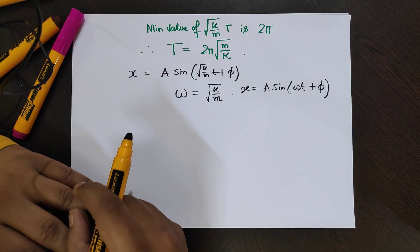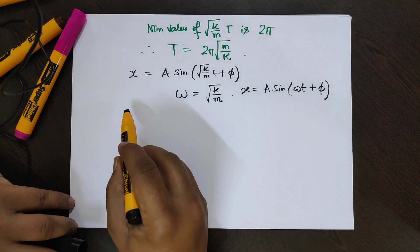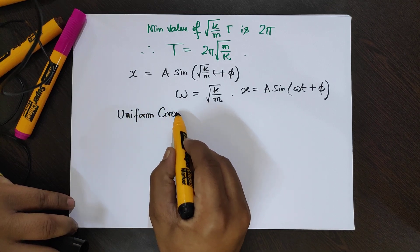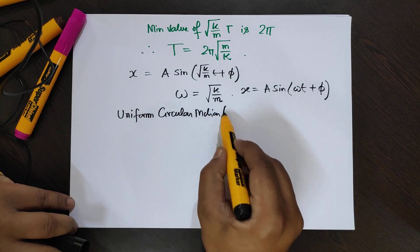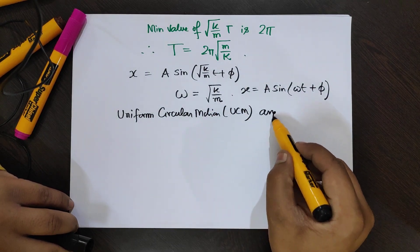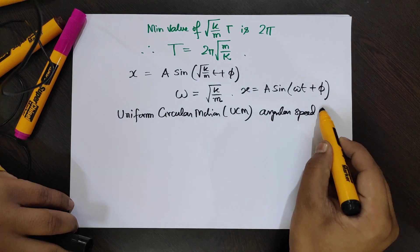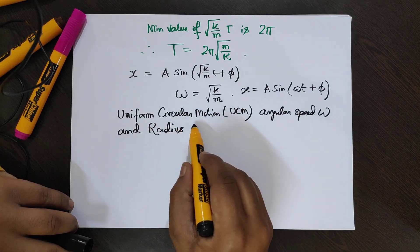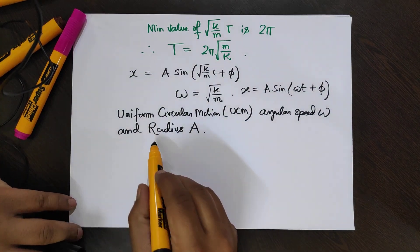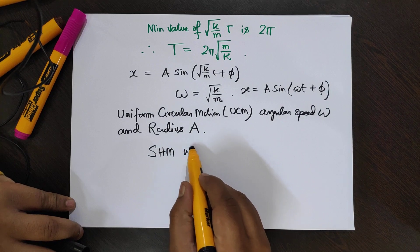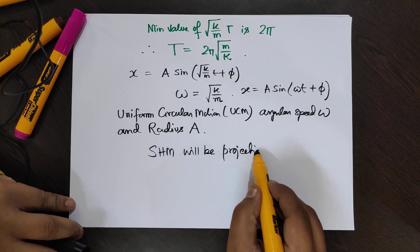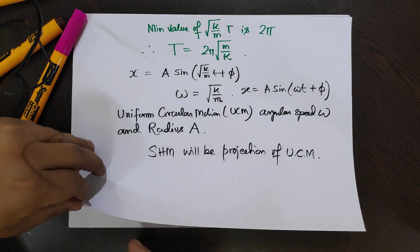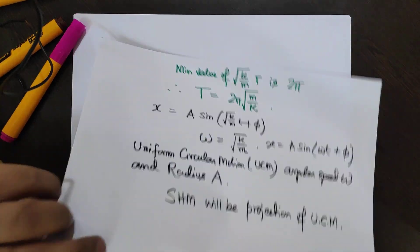We can compare SHM with uniform circular motion. If we have a UCM with angular speed omega and radius equal to A, then SHM will be the projection of that UCM. In the next section we will see in detail how SHM becomes the projection of uniform circular motion.